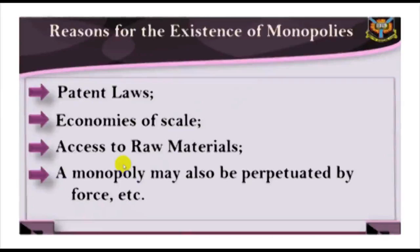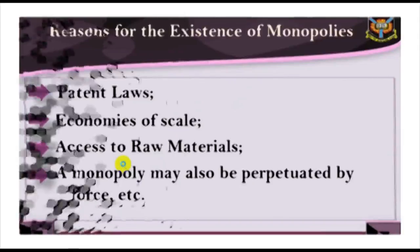Third, access to raw materials — in a situation where one firm has sole access to the raw materials used for producing a commodity, other firms may not be able to enter the industry. Fourth, a monopoly may also be perpetuated by faults. Fifth, potential competitors may be intimidated by threats ranging from sabotage to a price war, which the established monopoly has sufficient financial resources to win.